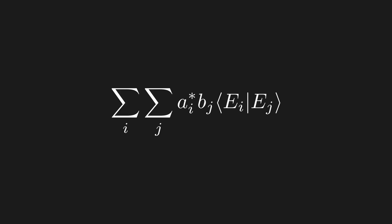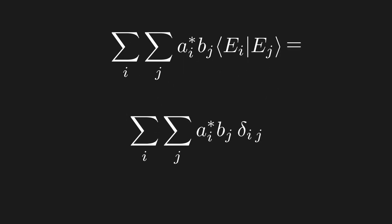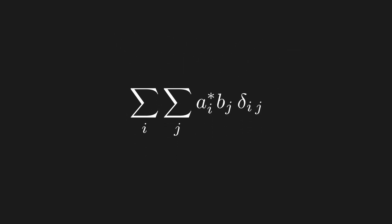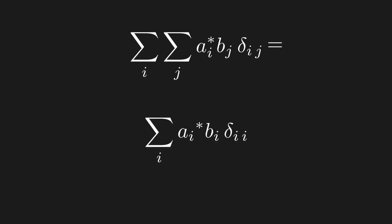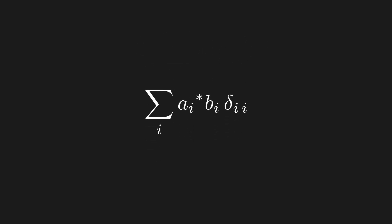We assumed this was an orthonormal basis, so we can write this inner product as a Kronecker delta. Now, remember what we said. The Kronecker delta is non-zero only when i equals j. So, in the inner j sum, the only non-zero term will be the term that matches the i index. So, we can collapse the inner sum and replace j with i wherever we see it. The remaining Kronecker delta just equals 1. See the technique?